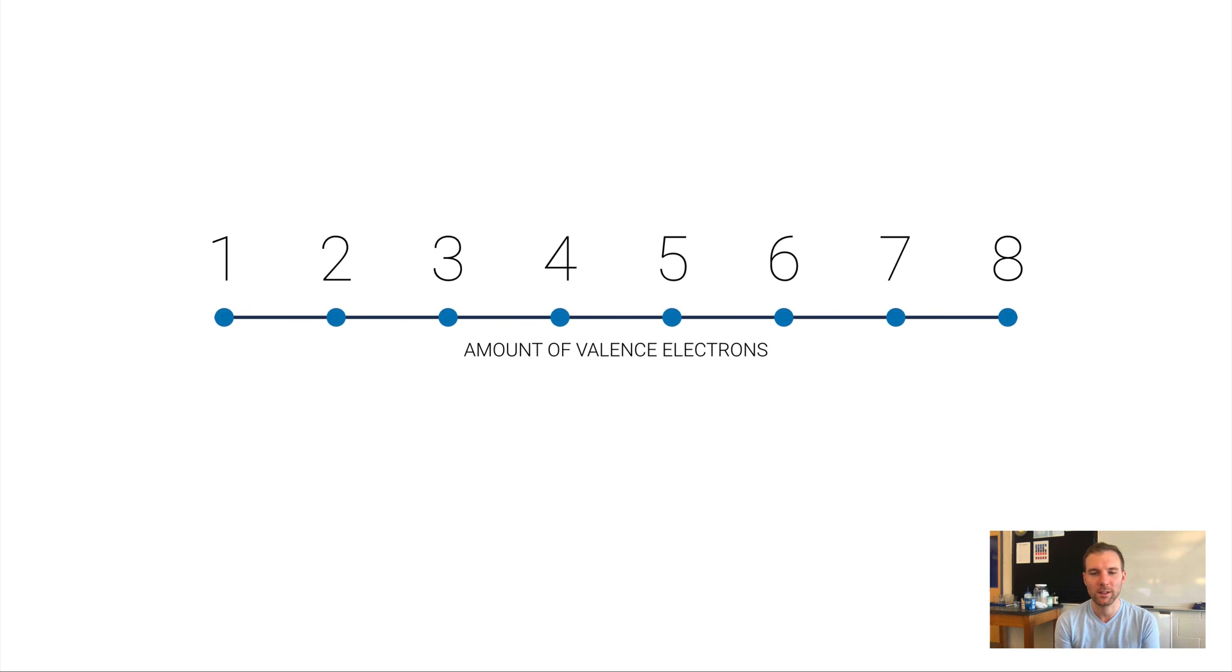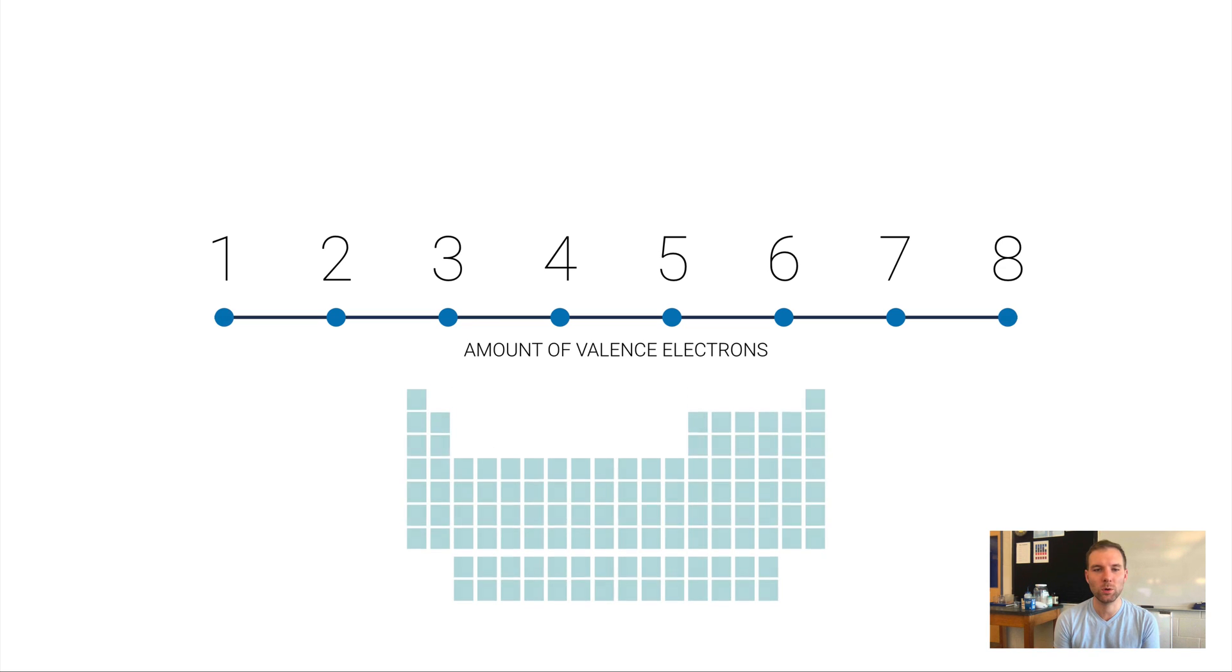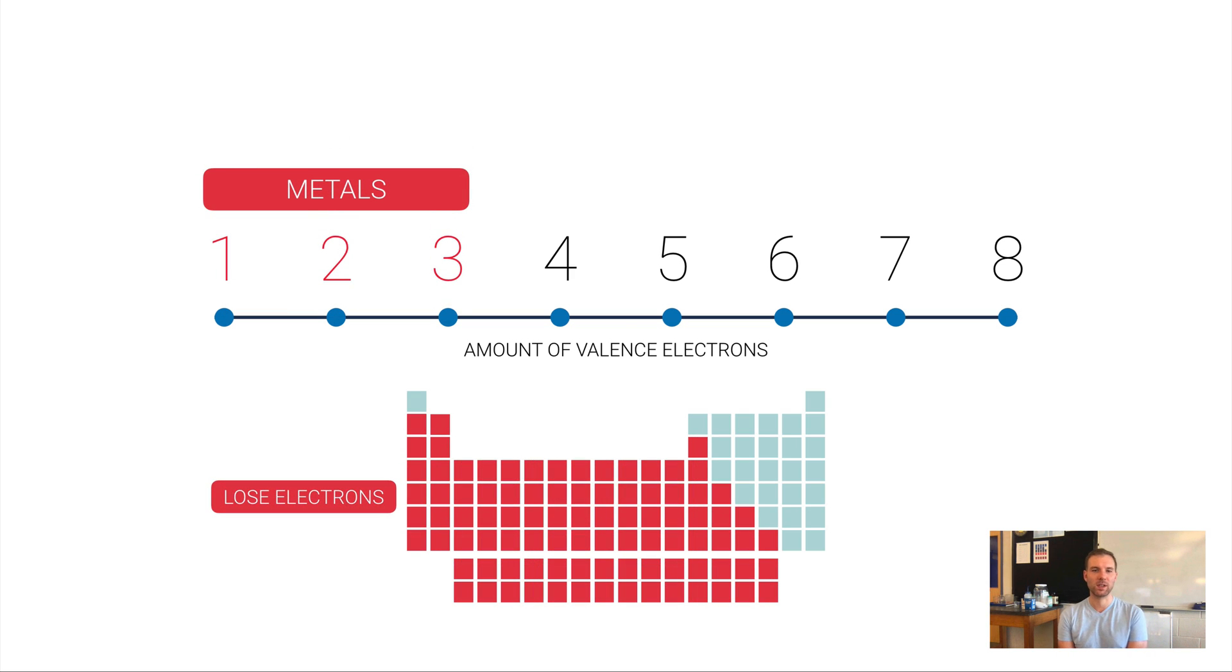If I'm an element that has one, two, or three valence electrons, I'm a metal in most cases. Therefore, those elements are going to want to lose their one, two, or three valence electrons to get a filled valence shell that's lying in wait underneath.